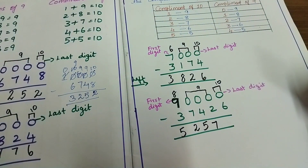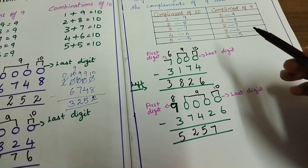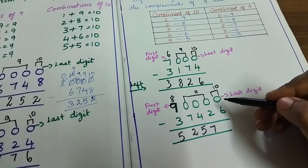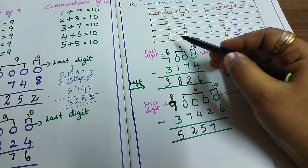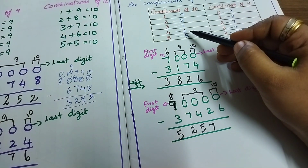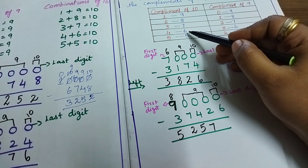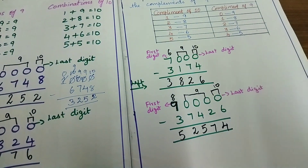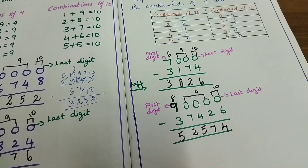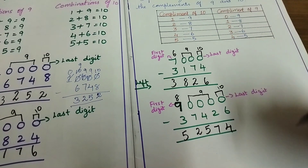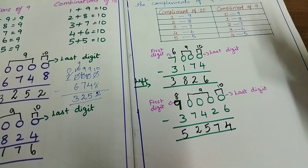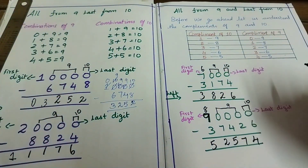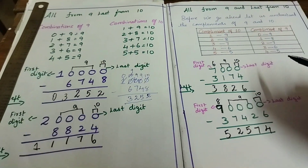4 plus 5 you should get 9. That is the way we are using it. Now the last number alone you should check for 10. What is the compliment of 6 in the combination of 10? It is 4. So if you know the compliment, within a second you can calculate using mind calculation - no need of pen or paper. All from 9, last from 10. This is your Vedic Maths trick.